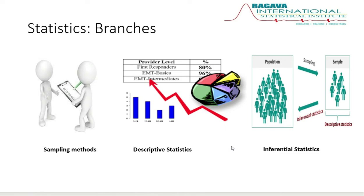Now we will see what are the main branches in statistics. Before going to the tools and techniques, we need to know the branches in statistics. The first one is the sampling method, the second is descriptive statistics, and the third is inferential statistics. The sampling method is about data collection — how to collect data, which sampling method to use, and how many samples to collect, which is the sample size.